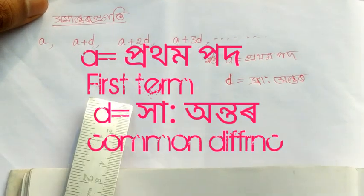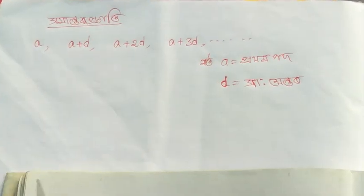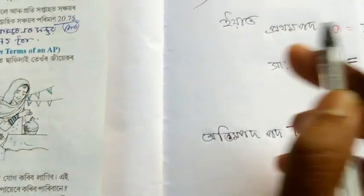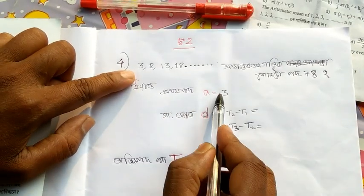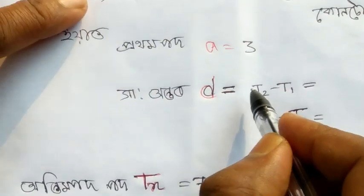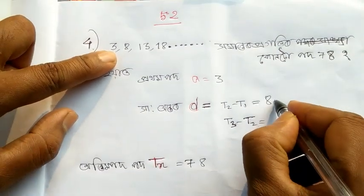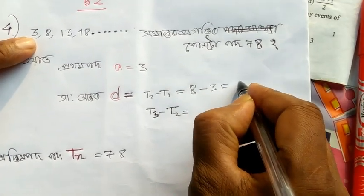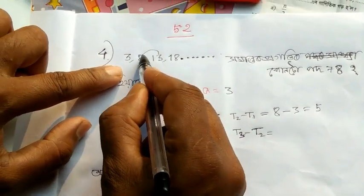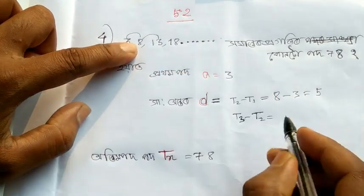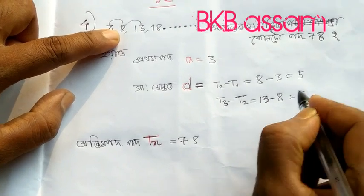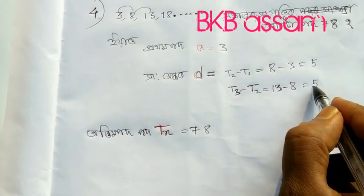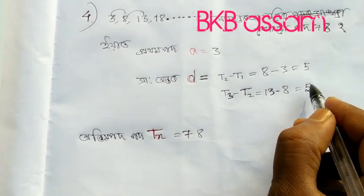A is the first term. This is the second one. 8 minus 3 is equal to 5, and 13 minus 8 is equal to 5.